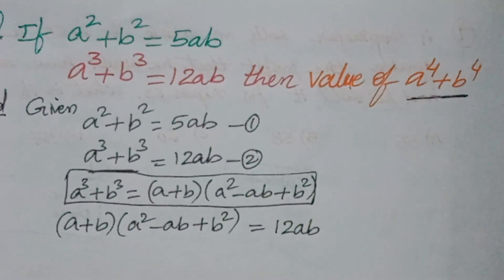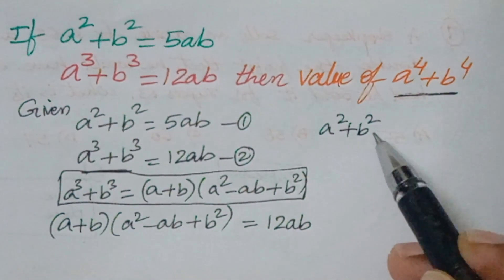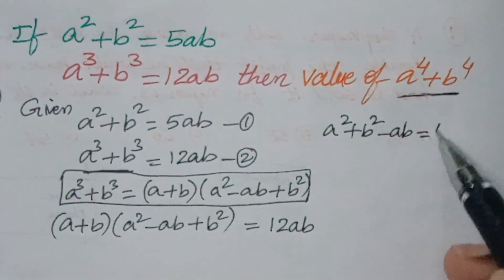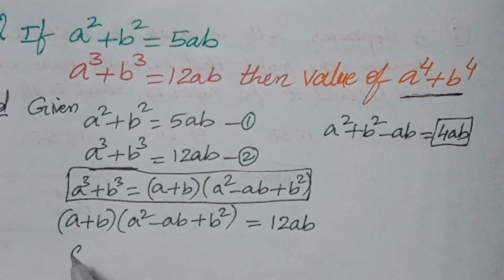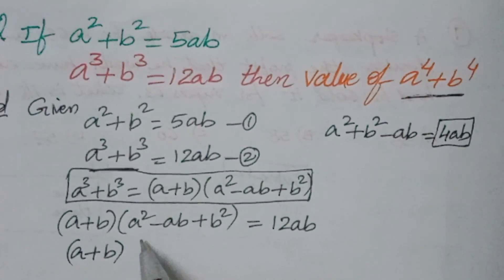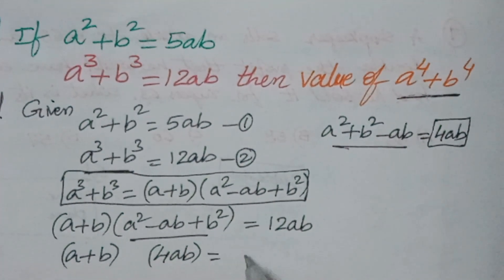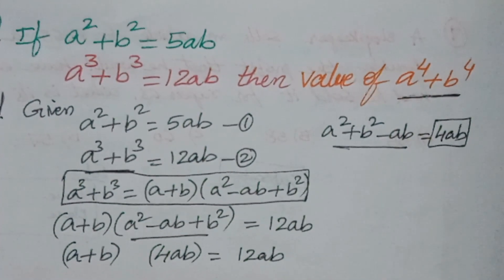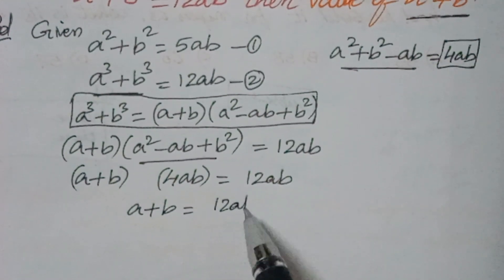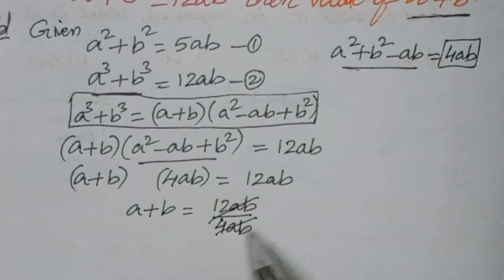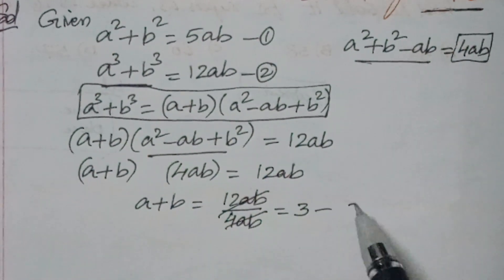From equation 1, a squared plus b squared equals 5ab, so a squared plus b squared minus ab equals 4ab. Substituting this into the factored form, we get (a plus b) times 4ab equals 12ab. Therefore, a plus b equals 12ab divided by 4ab, which simplifies to 3. Let this be equation 3.